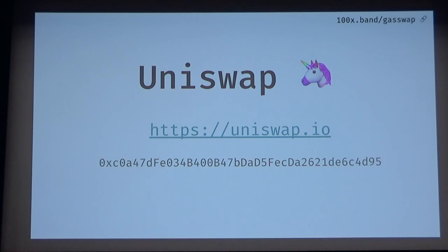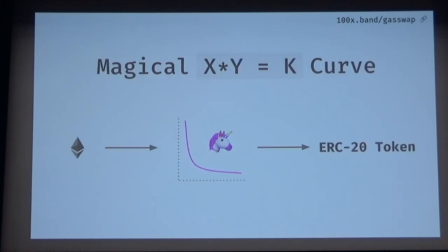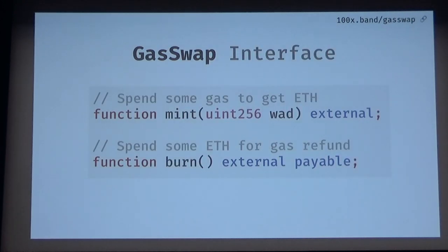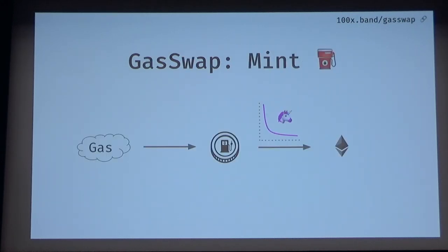Uniswap — you guys probably know about it. It's a magical curve where if you send some ETH to the contract, it returns you an ERC20 token, and if you send an ERC20 token to the curve, it returns you ETH. With the GasSwap interface, you have a mint function that takes the amount of ETH you want to have, and it mints ETH by spending some gas, and a burn function. To mint ETH, you just mint GasSwap and sell it to Uniswap. And to burn, you sell the ETH and then get a GasToken and burn the GasToken.